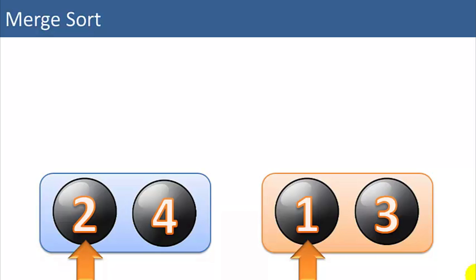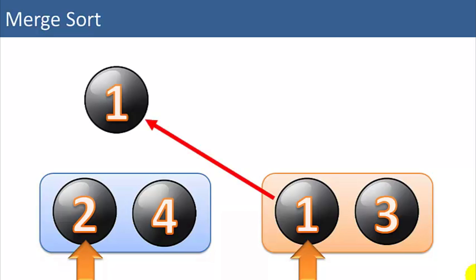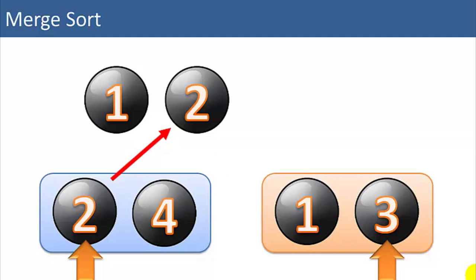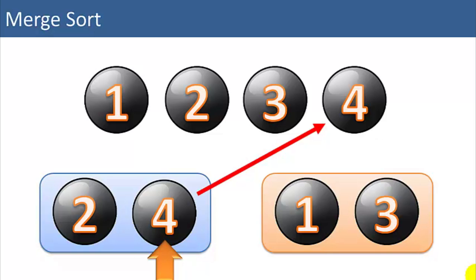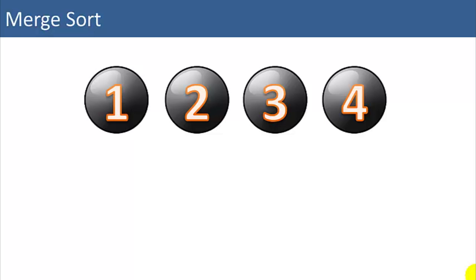To do that we compare the first two items, since we know those are the two smallest items — the leftmost item is the smallest in each list. We compare 2 to 1; 1 is smaller, so we add 1 back to the main list first. Then we compare 2 to 3; 2 is smaller, so we add 2. We compare 3 to 4; 3 is smaller, so we add 3. We're done with the right list, and all we have left is the left list — there's a 4 left, so we add that. Now we have a sorted list of four items. That, in a nutshell, is how merge sort works.